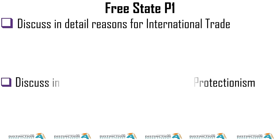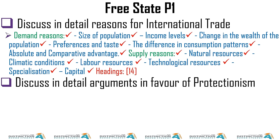The first essay (international trade) is easier than the second one (protectionism). For reasons for international trade, you need to distinguish demand reasons from supply reasons. Demand reasons include size of population and income levels. We have 14 headings in total. For arguments in favour of protectionism, we have eight headings. In Free State, there are more headings under macroeconomics than under economic pursuits.